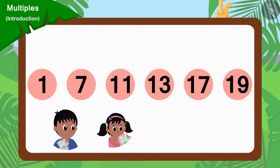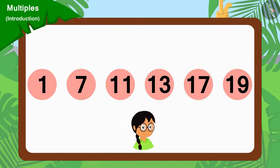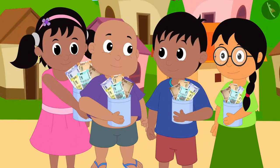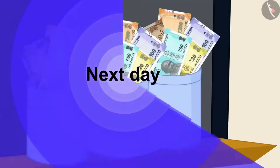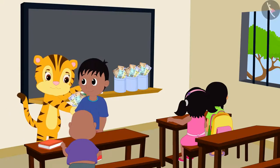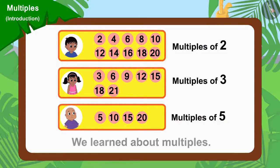As none of Raju, Pinky and Bablu were able to go to these houses, they took Meenu's help and asked her to collect donations from those houses. Raju, Pinky, Meenu and Bablu amassed a lot of donations through their hard work. The next day, they gave all the money they had collected to their teacher and got a lot of appreciation from her. Children, in this video, we learned about multiples. In the next video, we will learn more about it through some interesting examples.